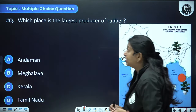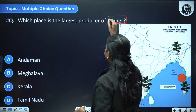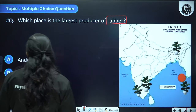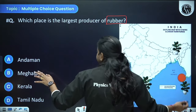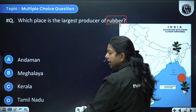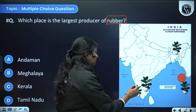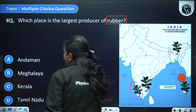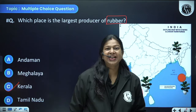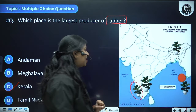Now for map-based questions: which place is the largest producer of rubber? We have a map with options Andaman, Meghalaya, Kerala, or Tamil Nadu. The answer is option C — Kerala is the largest producer of rubber in our country.